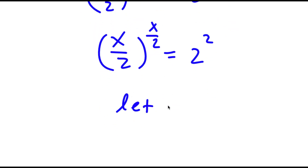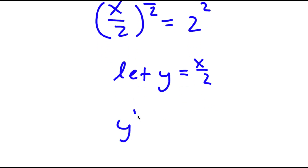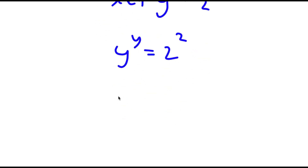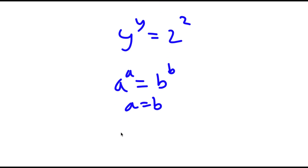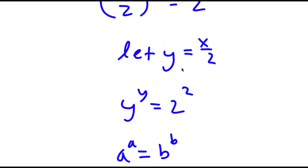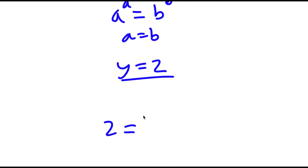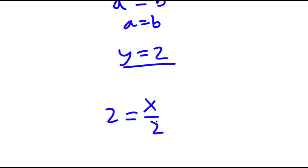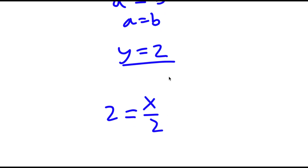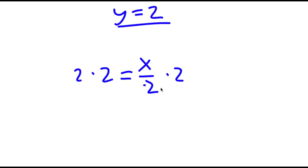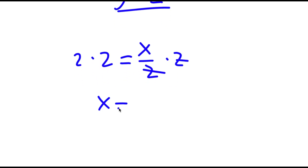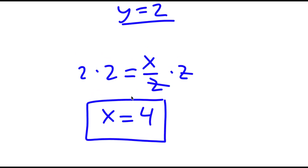Now I'm going to let the variable y equal x over 2. So now if I substitute y for x over 2, I have y to the power of y is equal to 2 to the power of 2. If I have something in the form a to the power of a is equal to b to the power of b, this means that a is equal to b. So in this case, y is equal to 2. Now remember we set y equal to x over 2. So if y equals 2 and y is also equal to x over 2, this means 2 is equal to x over 2. Multiplying both sides by 2, I get x is equal to 4. So this is my answer.